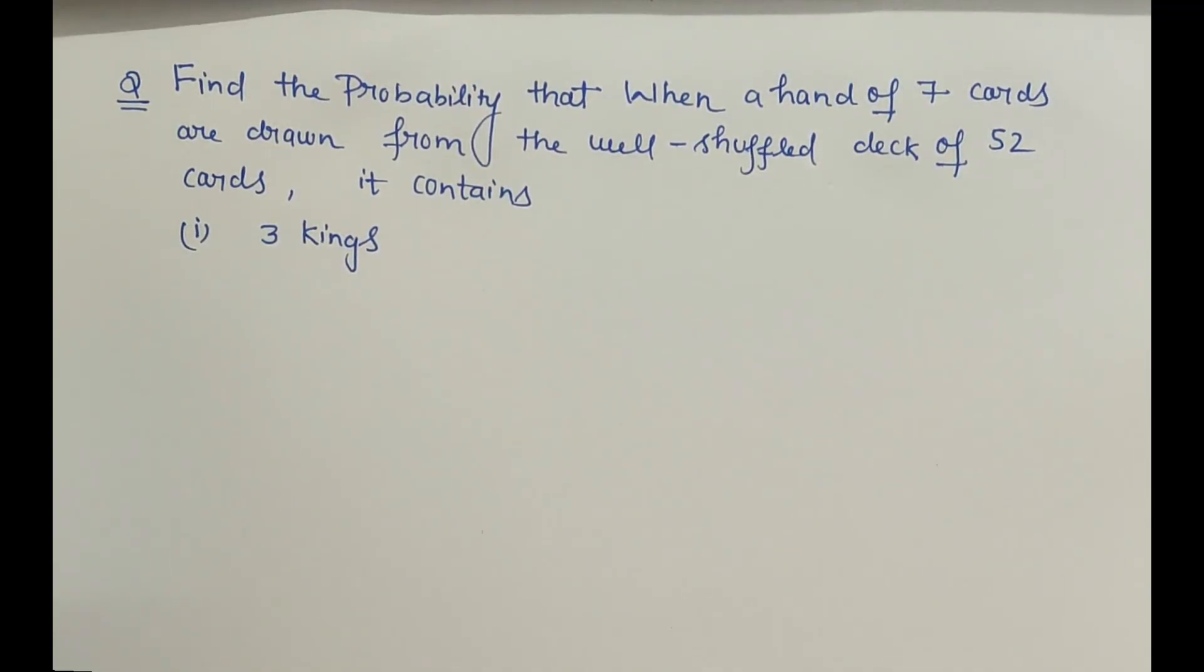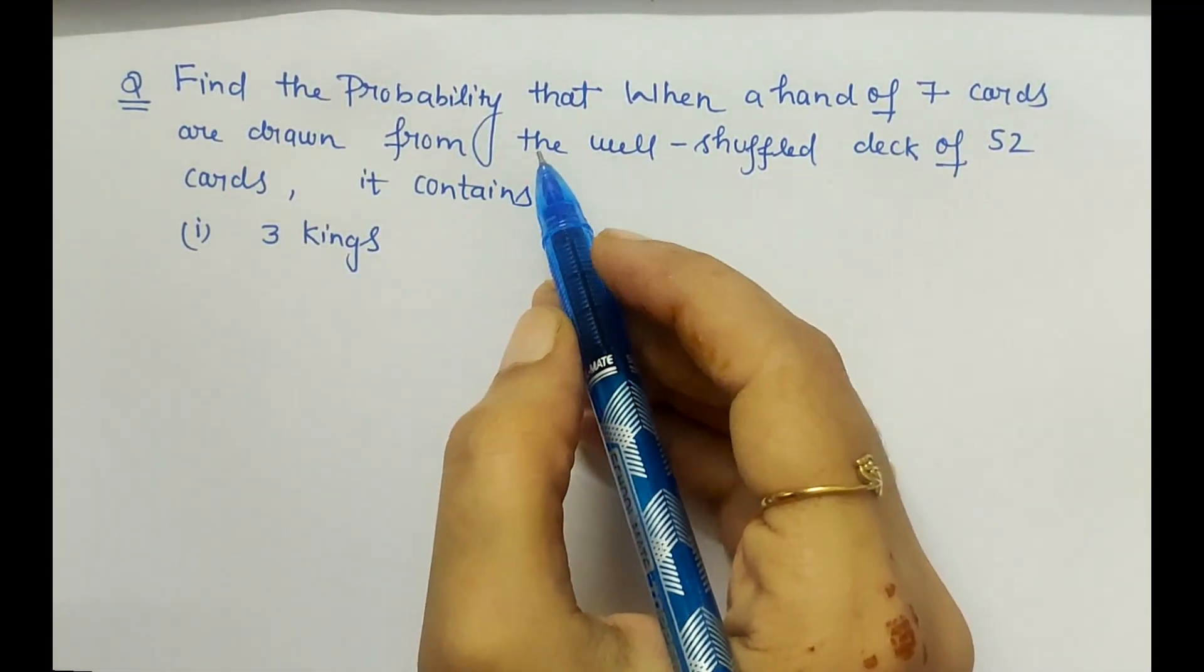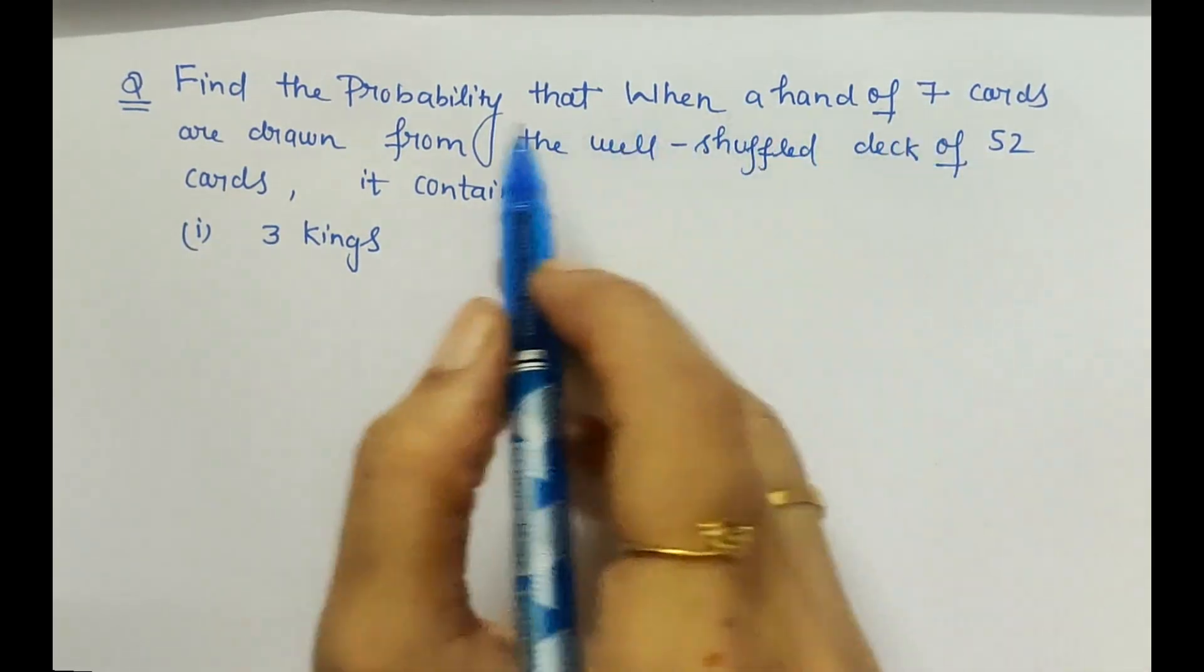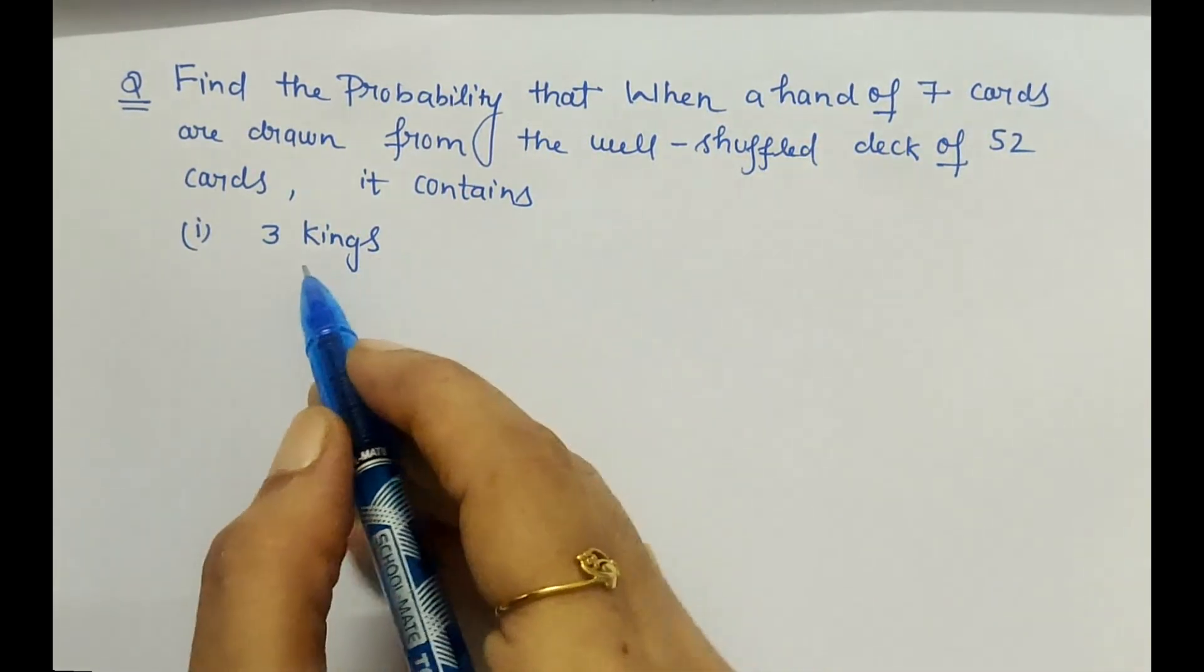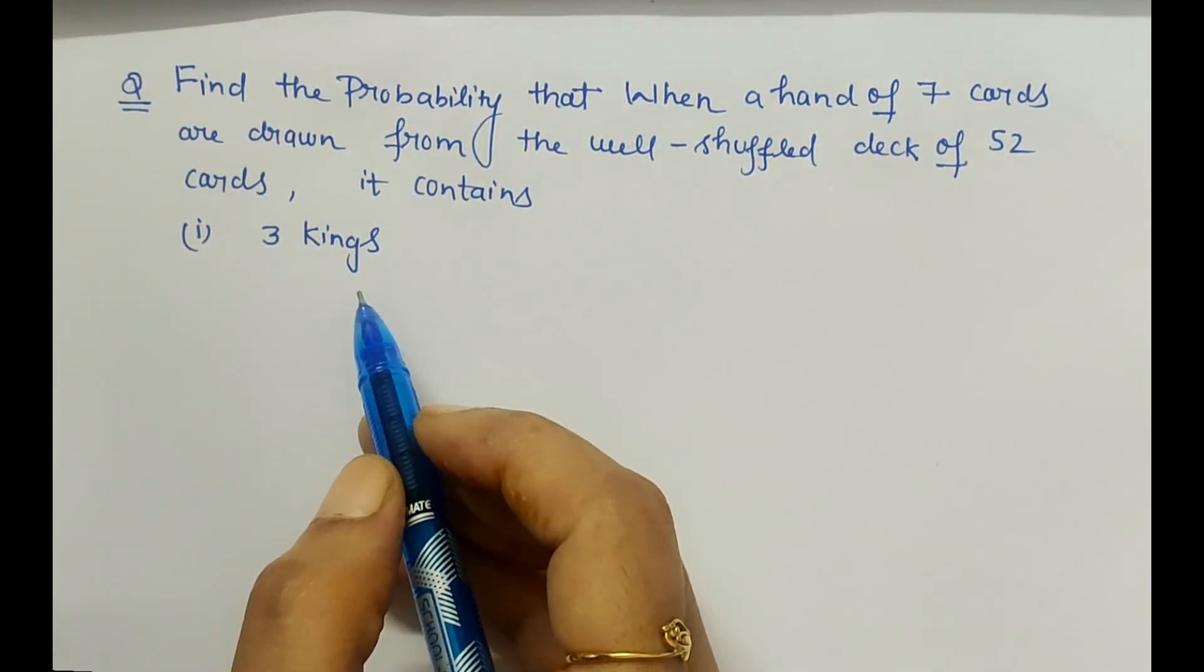Hello friends, in this video I'm going to explain how to find the probability when a hand of seven cards are drawn from the well-shuffled deck of 52 cards and it contains three kings, only three kings.